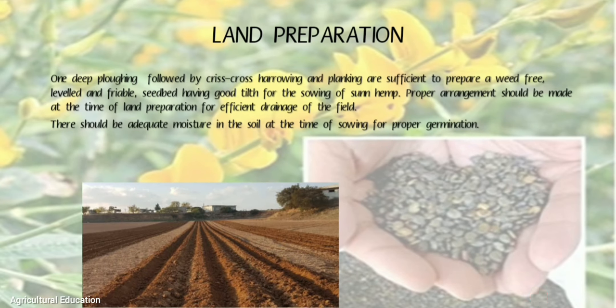Land Preparation: One deep plowing followed by criss-cross harrowing and planking are sufficient to prepare a weed-free, level, and friable seedbed having good tilth for sowing of sunhemp. Proper arrangement should be made at the time of land preparation for efficient drainage of the field. There should be adequate moisture in the soil at the time of sowing for proper germination.